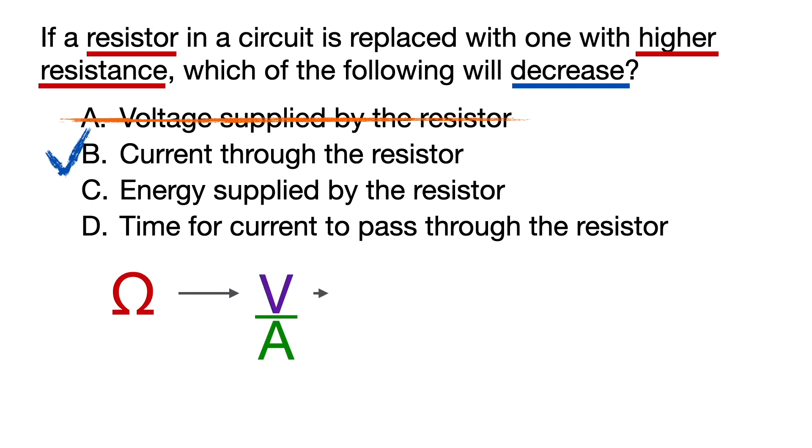The volt always first breaks open into joules per coulomb, and joules is the unit of energy. The amp always breaks open into coulombs per second. And do notice that the coulombs per second is inverted because amps is in the denominator of the original unit fraction.